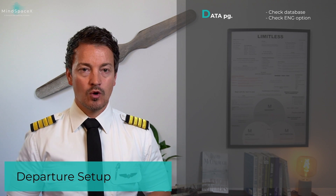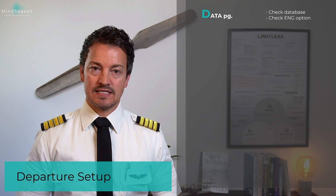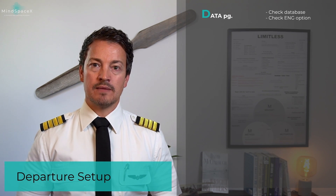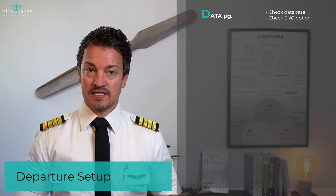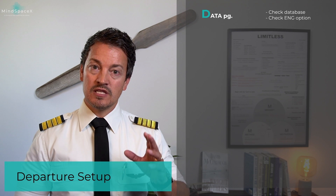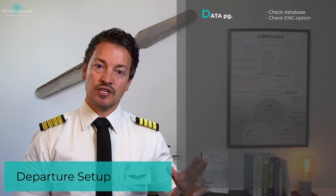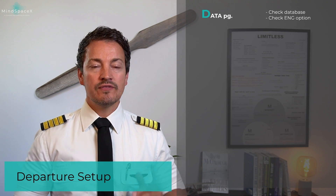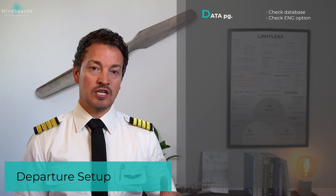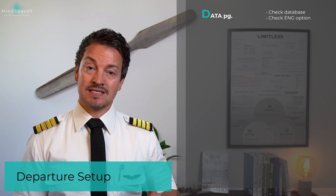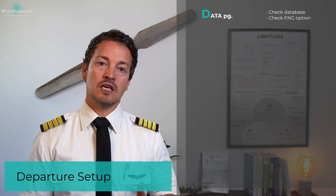The data page allows you to check the database which the MCDU is using, as well as the engine options for this aircraft. And why is this important? Well, the database changes every 28 days — we've talked about the MCDU and its setup and its database in the Autoflight chapter. The database, if it needs changing, deletes all information you have already put in. So if you need to change because the database is out of date, this has to be done prior to any other entries.